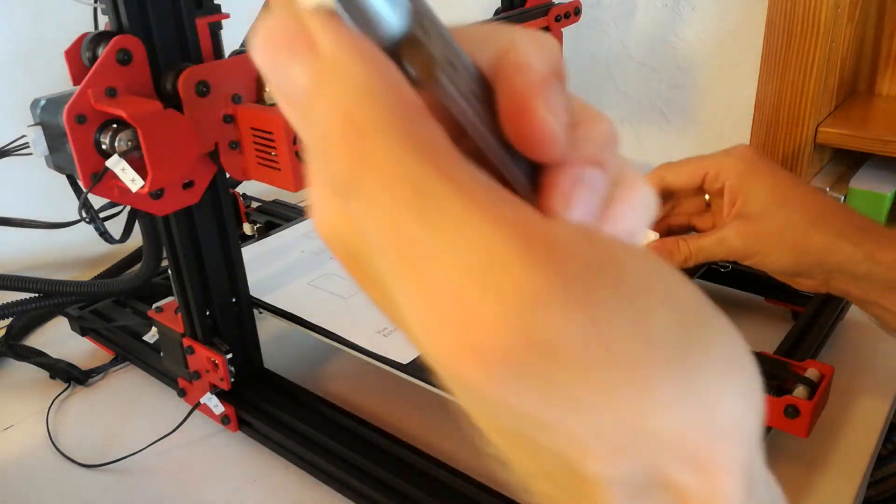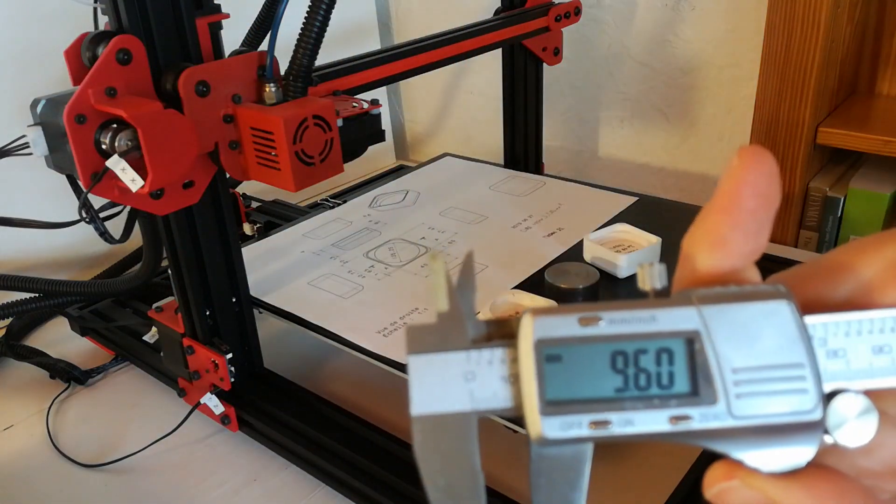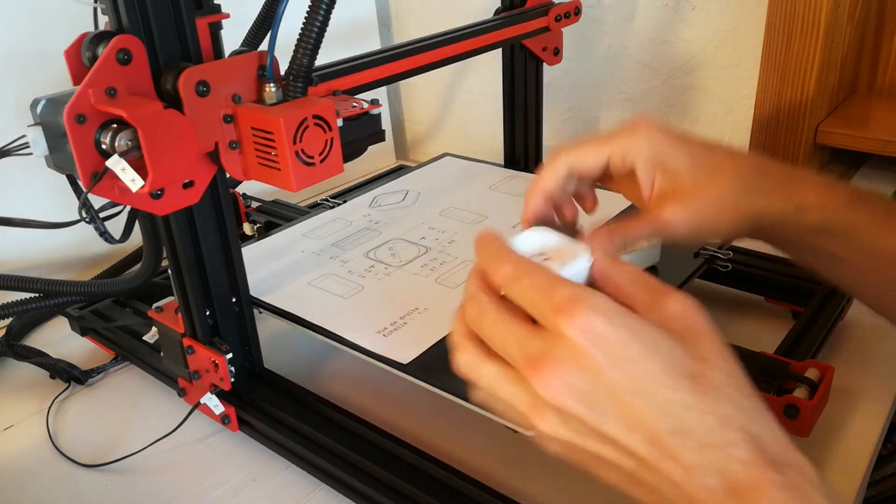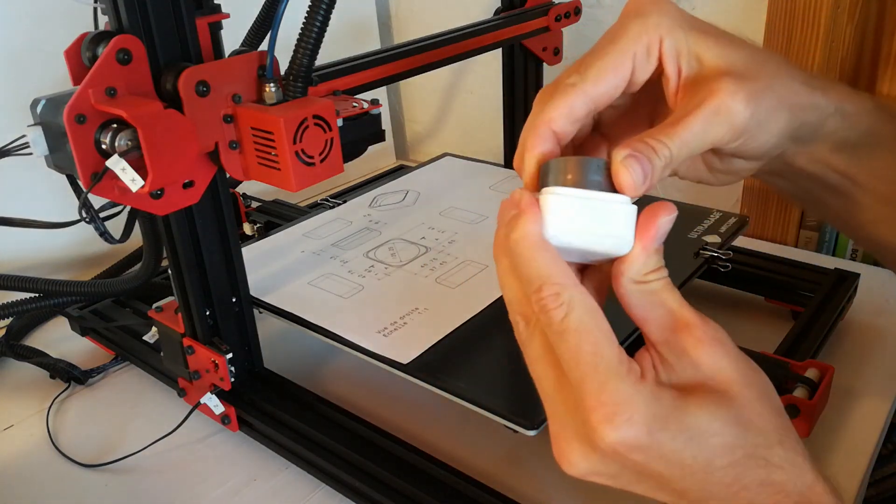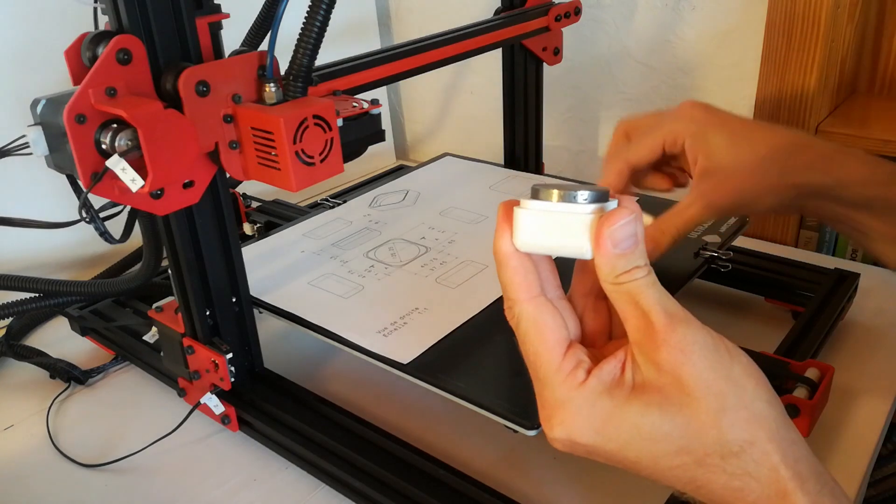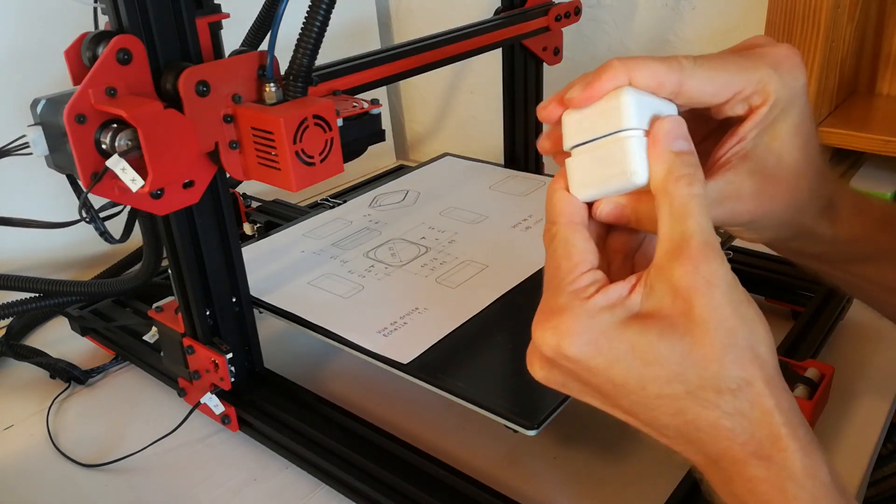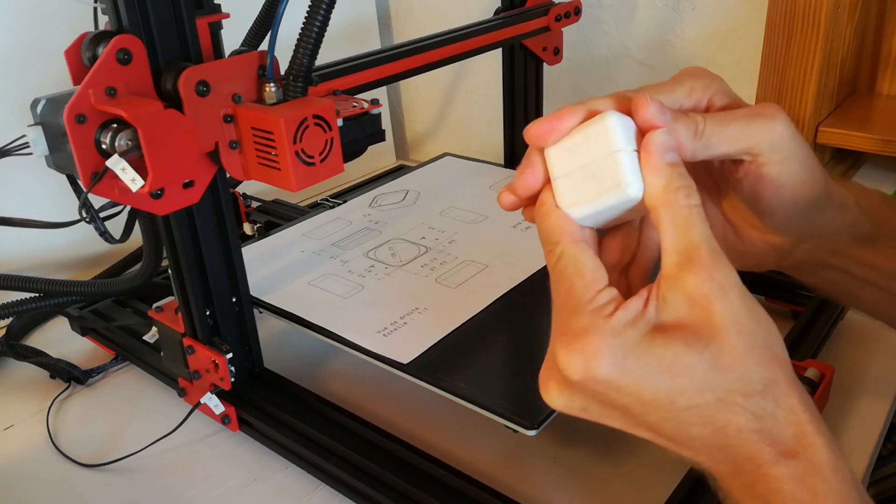This is especially important for functional parts which interact with each other. As you know, there are many reasons for deviation of dimensions between CAD model and 3D printed parts, like material shrinkage, printer calibration, and so on.